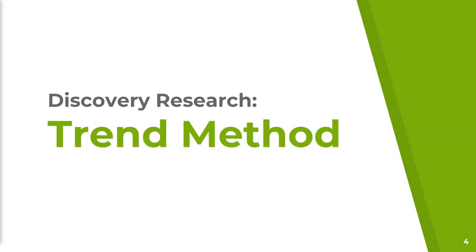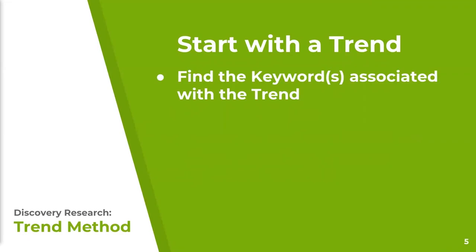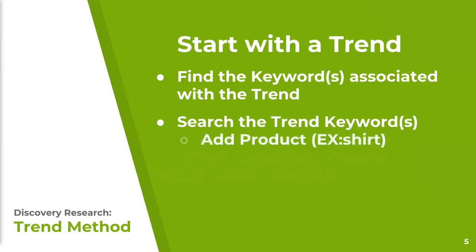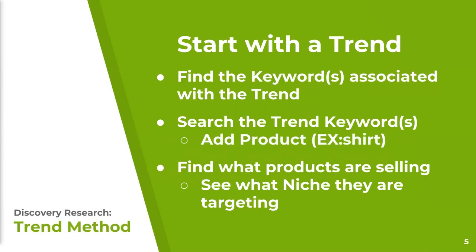This is the trend method. We start with a trend, find the associated keywords, then add those trend keywords to the product keyword — in these examples we're using shirts — and search Amazon. After searching using the trend keywords and product keywords, we find which products are selling best and see what niches those competitors are targeting.